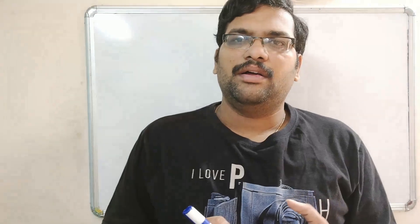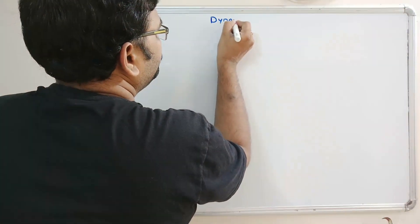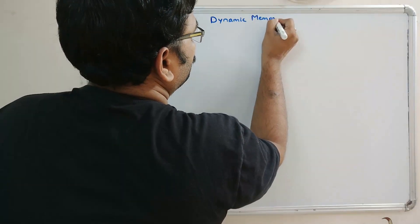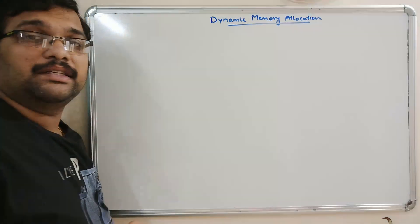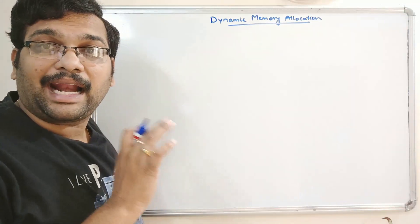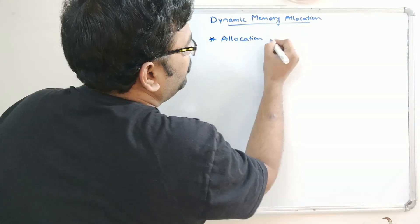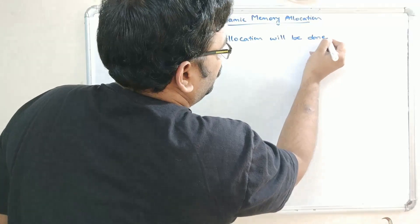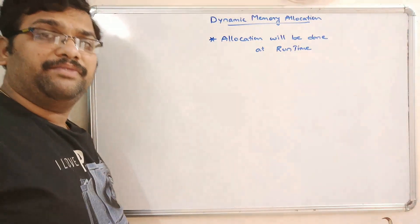Hello friends, welcome back to our channel. In the previous sessions we have covered many concepts in C language, and today we discuss one important topic in C language — dynamic memory allocation — that means allocating memory for variables at run time.